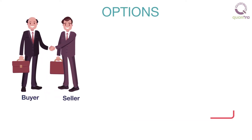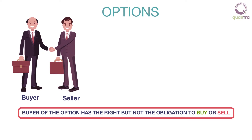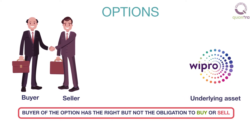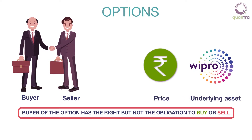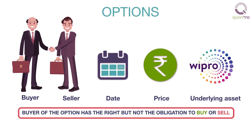An option contract is an agreement between the buyer and the seller of the option, where the buyer of the option has the right, but not the obligation, to buy or sell a specified amount of the underlying asset at a specified price, on or before a specified date. If the option buyer chooses to exercise the option, the seller is obligated to sell as per the terms of the contract.